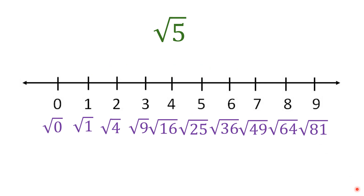Continuing: 3 is the square root of 9 because 3 times 3 is 9; 4 is the square root of 16 because 4 times 4 is 16; and so on up to 9, which is the square root of 81 because 9 times 9 is 81. It's easier to plot if you label these perfect square roots on the number line.